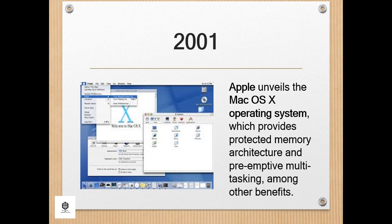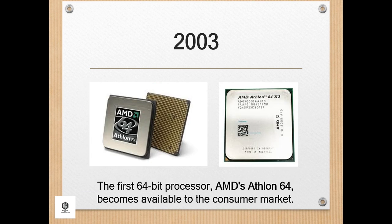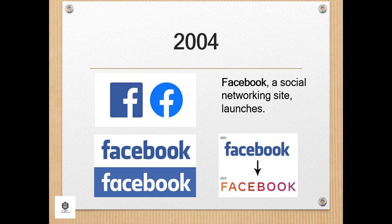In 2001, Apple unveiled the Mac OS X operating system, which provided protected memory architecture and preemptive multitasking, among other benefits. Microsoft also rolled out Windows XP, which had a significantly redesigned interface. Meanwhile, in 2003, the first 64-bit processor, AMD's Athlon 64, became available to the consumer market.